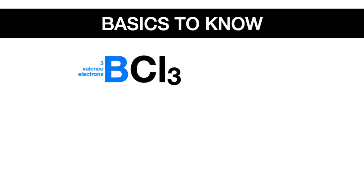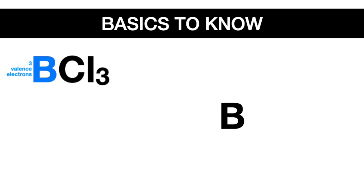Now start the Lewis dot structure by writing the chemical symbol of the central atom, and envision that any chemical symbol has four sides to it. Then start drawing the dots one by one on each of the sides. Boron only has three, so we'll draw one electron on three of its sides.